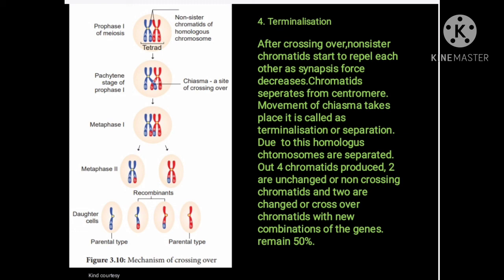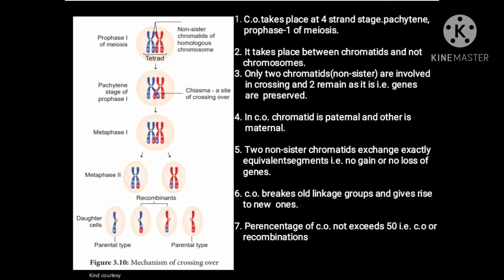Key features: the crossing over takes place at the four-strand stage in prophase I of meiosis. It takes place between chromatids and not the chromosomes. Only two chromatids — the non-sisters — are involved in crossing over, and two remain as they are, so genes are preserved.